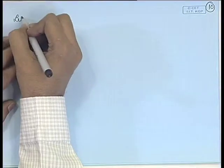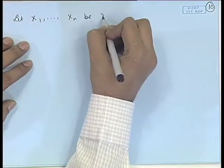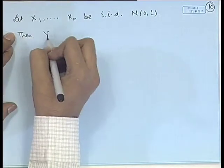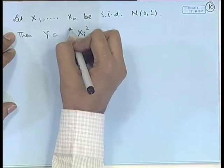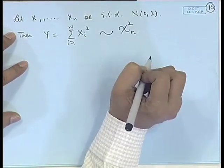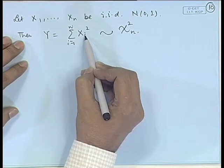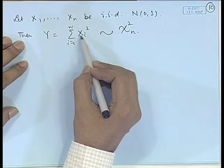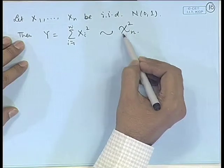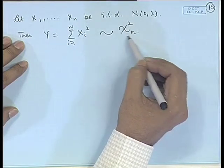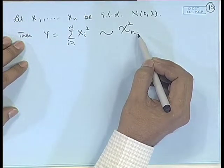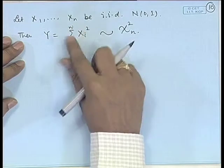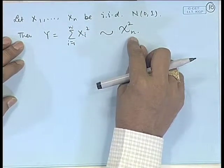Now let X₁, X₂, ..., X_n be independent and identically distributed standard normal random variables. Then Y = Σ X_i² follows χ²(n). Since each X_i² ~ χ²(1), and if X₁, X₂, ..., X_n are independent then X₁², X₂², ..., X_n² are also independent, therefore by the additive property the sum follows χ²(n). Now you see that if X₁, ..., X_n is a random sample from a standard normal variable, then Σ X_i² is a statistic, and therefore chi-square becomes a sampling distribution.